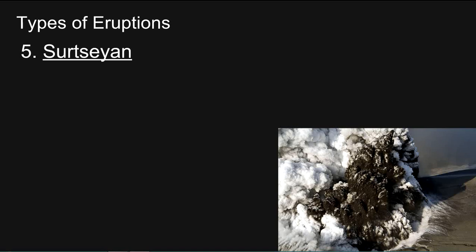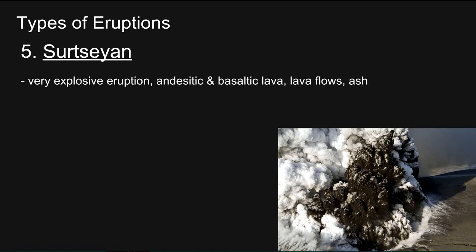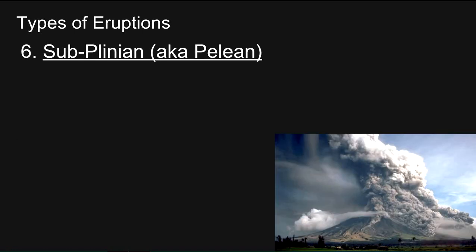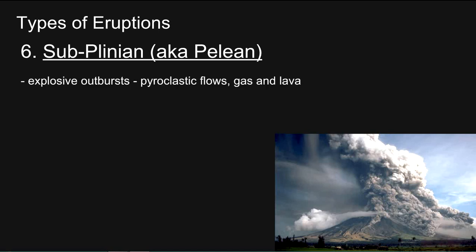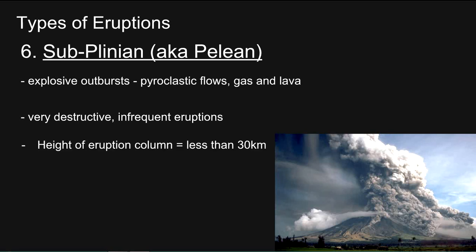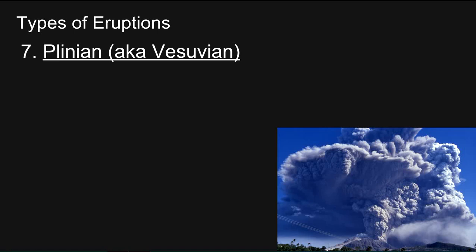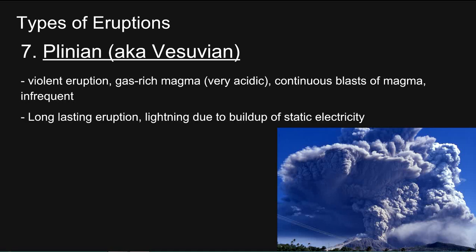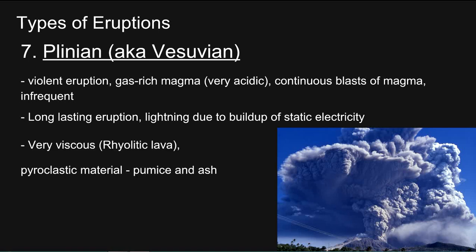Number 5, Surtseyan: very explosive eruption, andesitic and basaltic lava. We get lava flows and ash, and it takes place in shallow areas or lakes. Viscous magma. Height of eruption column is less than 2 km. Finally, Plinian or Vesuvian: a violent eruption, gas-rich magma which is very acidic. Continuous blasts of magma, quite infrequent, long-lasting eruption. Lightning due to a build-up of static electricity. Very viscous rhyolytic lava. Pyroclastic material comprised of pumice and ash. Height of eruption column is less than 55 km.